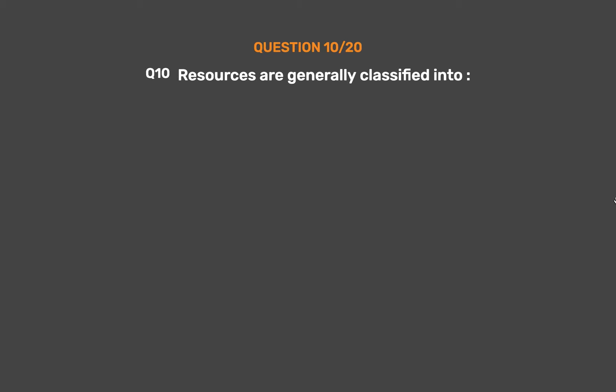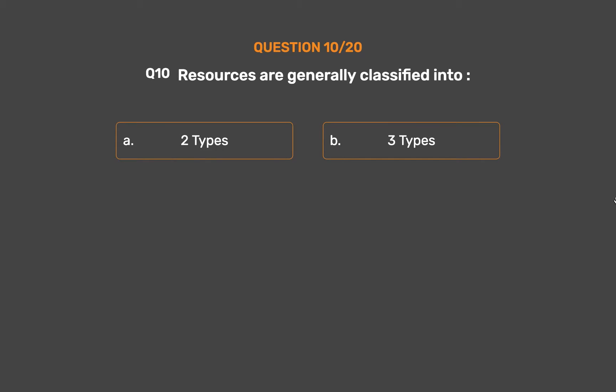Question number 10. Resources are generally classified into: Option A: Two types. Option B: Three types. Option C: Four types. Option D: Five types.